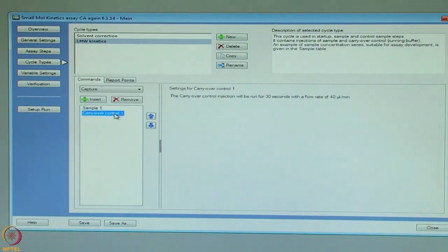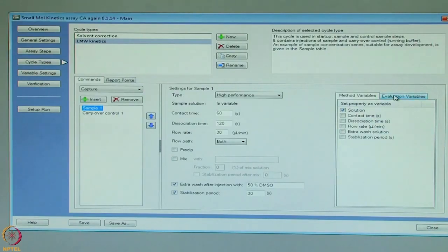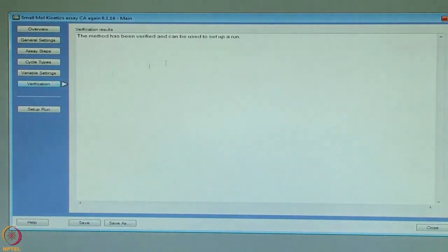Also, there is a carryover control injection will be given at a flow rate of 40 microlitre per minute. Similarly, the sample solution is a variable here. Also, the concentration and the molecular weight are variable here. So, we go into the verification mode and see that the method has been verified and can be used to set up a run.